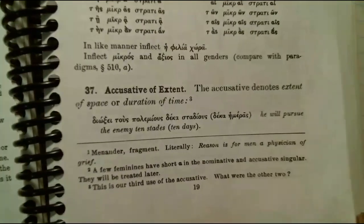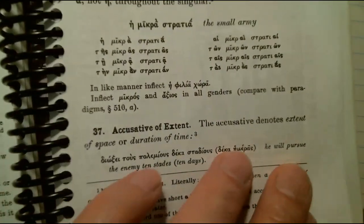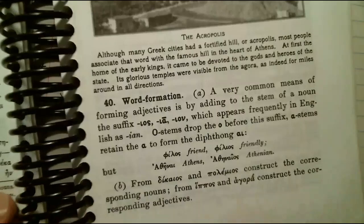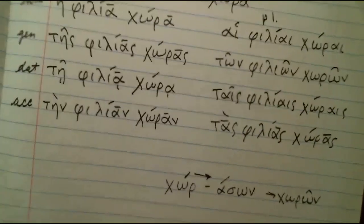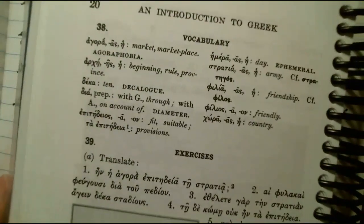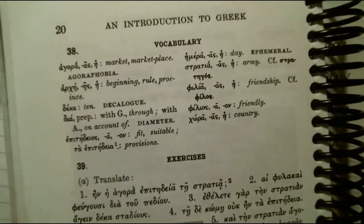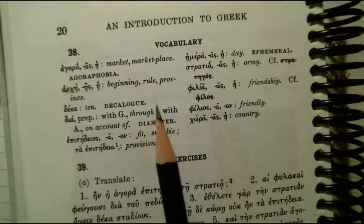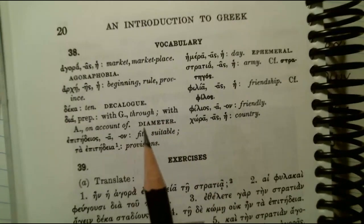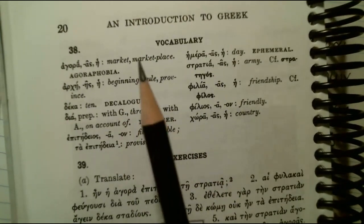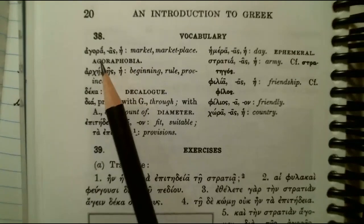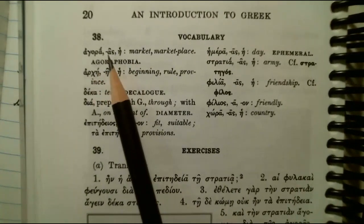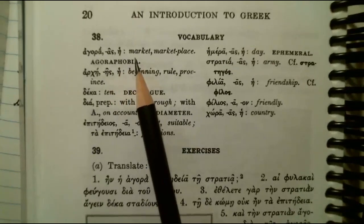I hope that makes sense. If you have questions or comments, put those in the comments below. That's the lesson for today — pretty straightforward. So vocabulary: we've got a lot of words that are going to go from eta to alpha because of the epsilon-iota-rho rule, like agora.